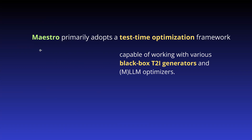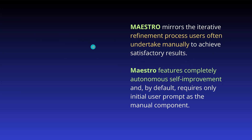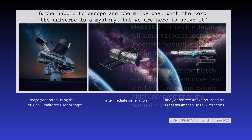This new framework called Maestro is primarily a test-time optimization framework, and the real beauty is it is capable of working with various black box text-to-image generators — so it's not restricted to Google. You can go with whatever you want, and it also works with different multimodal large language models. The idea is that Maestro features a complete autonomous self-improvement engine that requires only the initial user prompt as the manual component, and for the rest of the optimization, this will be done by an automated AI system.